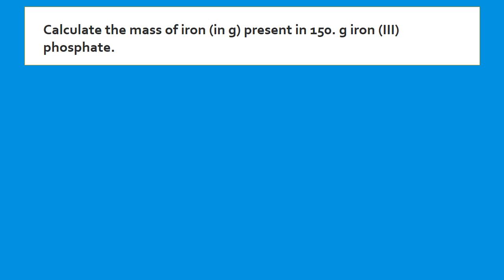This question asks us to calculate the mass of iron in grams present in 150 grams of iron(III) phosphate. First, we write the formula. Since it's iron-3, that's a transition metal indicated by the Roman numeral, meaning iron has a +3 charge. Phosphate has a −3 charge; +3 and −3 add to 0, so they combine in a 1:1 ratio — that's the formula FePO₄.